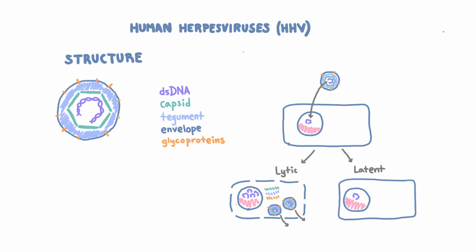Latent means that the viral DNA silently settles in the nucleus and does not start replicating or transcribing genes — it can actually stay there for years. The question is, why would the virus want to do that? The answer is that at some later point it can reactivate. We don't know exactly how or why it reactivates, but something happens and the virus starts transcribing some of its genes again and gets the whole lytic machinery going.